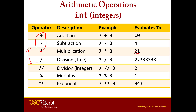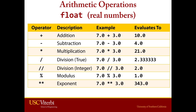We'll look at the next three at the bottom in just a second. If we do the same thing with floats or real numbers, again these first four operate as you would expect — 7.0 plus 3.0 gives you 10.0, and so on. The first four including division you can consider mostly familiar.